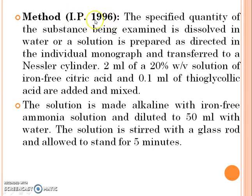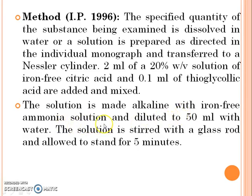Method according to IP 1996: The specified quantity of the substance being examined is dissolved in water, or a solution is prepared as directed in the individual monograph, and transferred to the Nessler cylinder. 2 ml of a 20% w/v solution of iron-free citric acid and 0.1 ml of thioglycolic acid are added and mixed. The solution is made alkaline with iron-free ammonia solution and diluted to 50 ml with water. The solution is stirred with a glass rod and allowed to stand for 5 minutes.